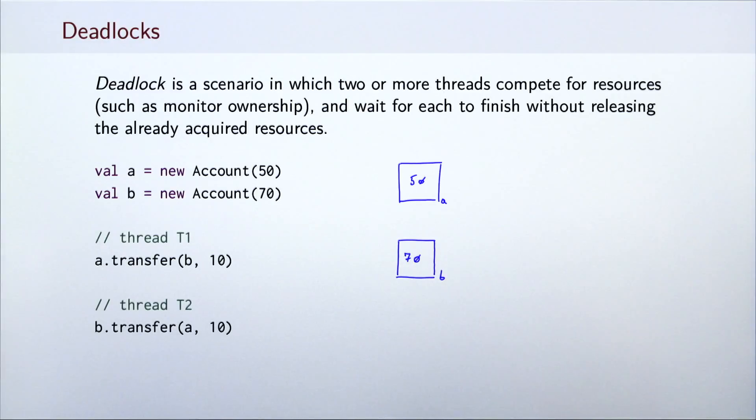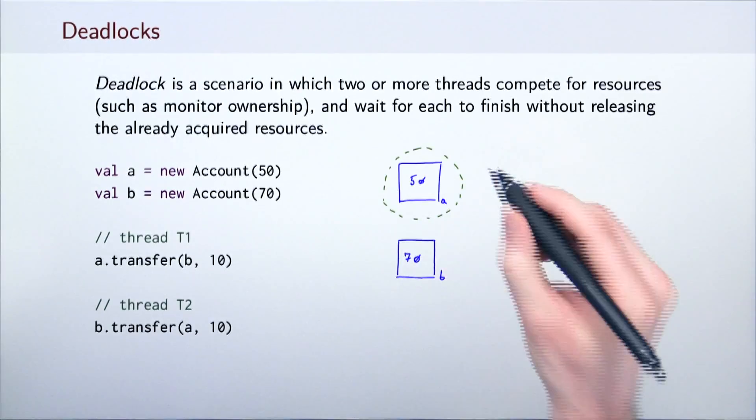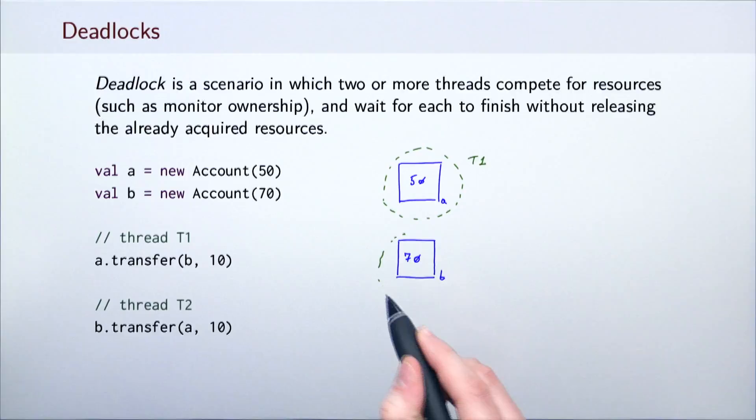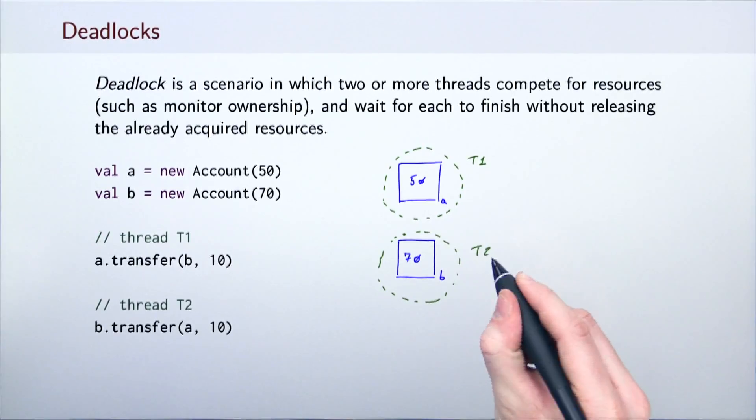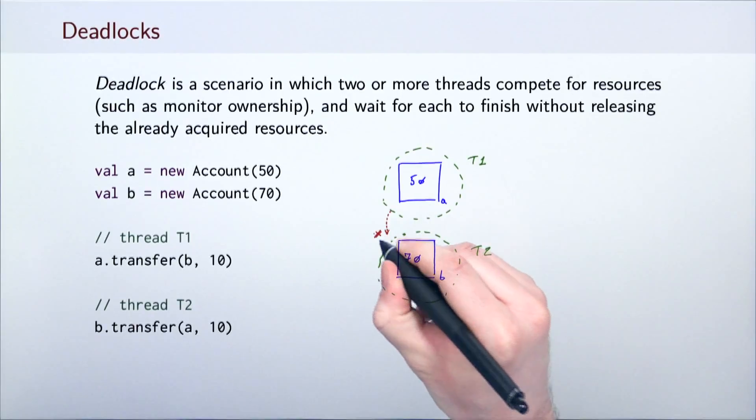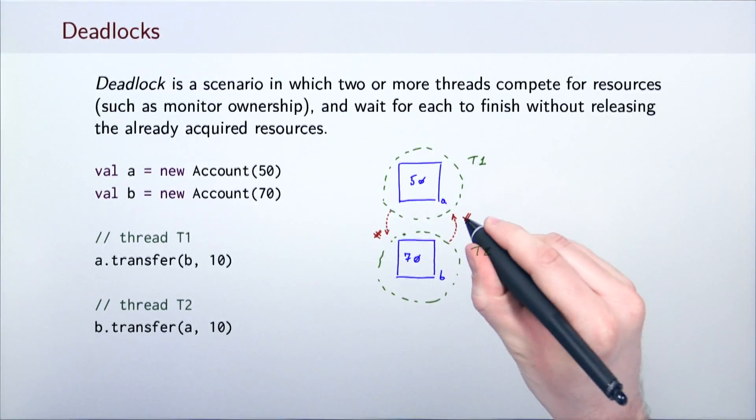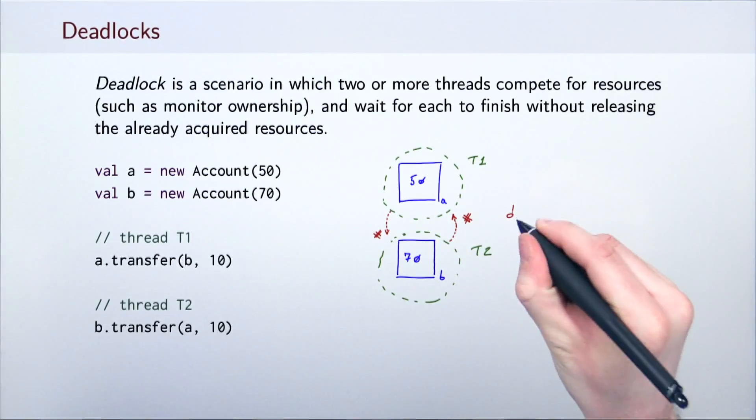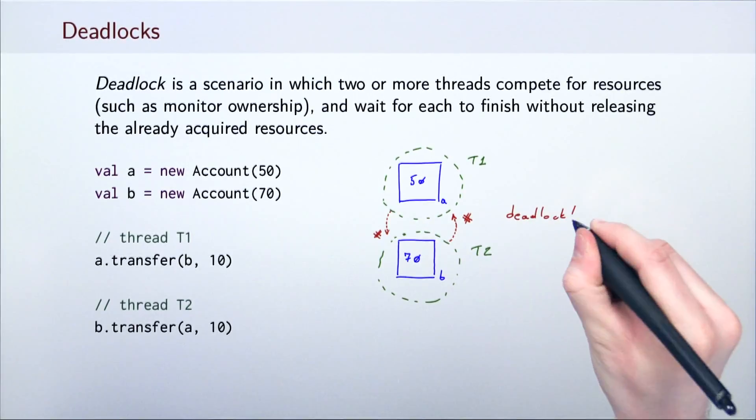The two threads start the synchronized statement on these accounts in different order. The first thread enters the synchronized block on a and the second thread enters the synchronized block on b. At this point, the first thread blocks until the monitor on object b becomes available and vice versa. Neither thread makes progress and a deadlock occurs.